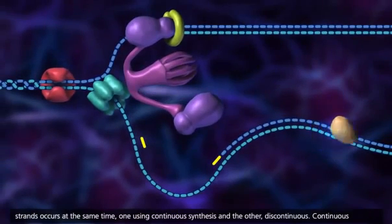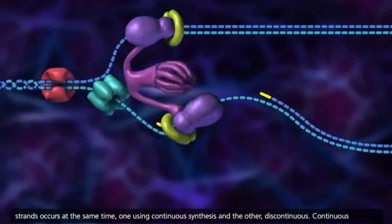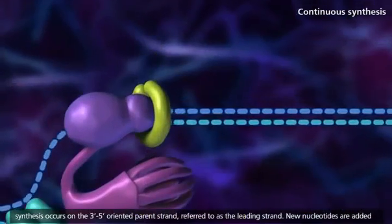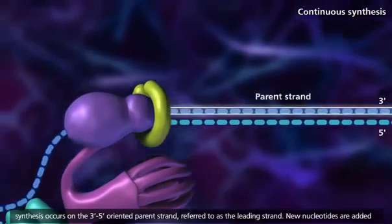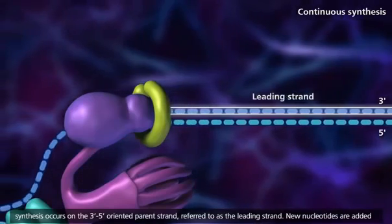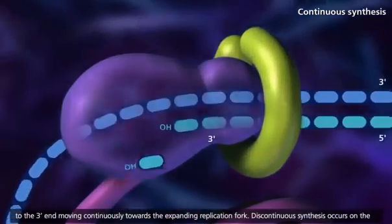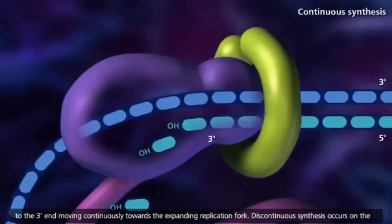Replication of both strands occurs at the same time, one using continuous synthesis and the other discontinuous. Continuous synthesis occurs on the 3' to 5' oriented parent strand, referred to as the leading strand. New nucleotides are added to the 3' end, moving continuously toward the expanding replication fork.